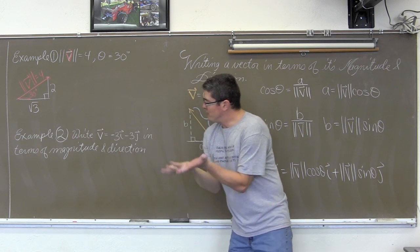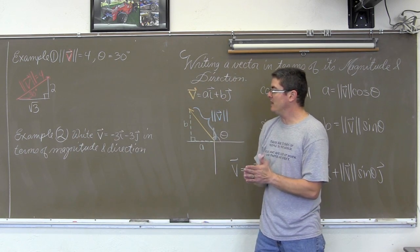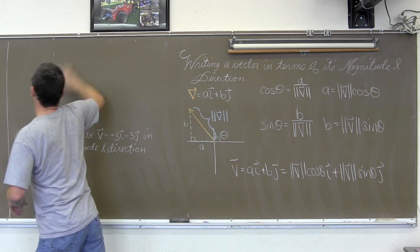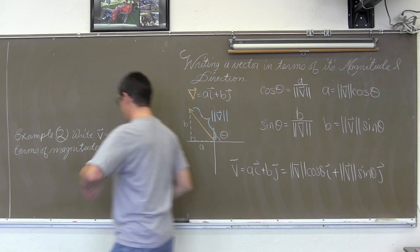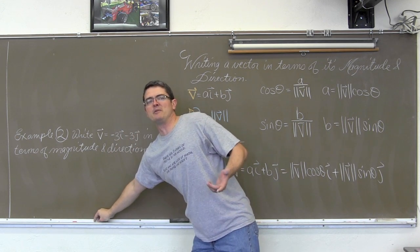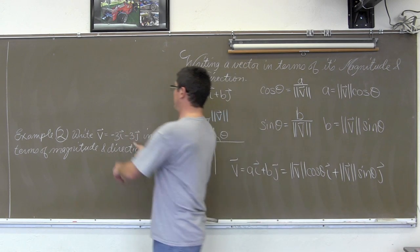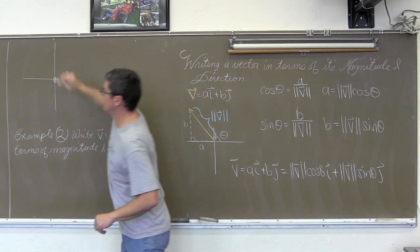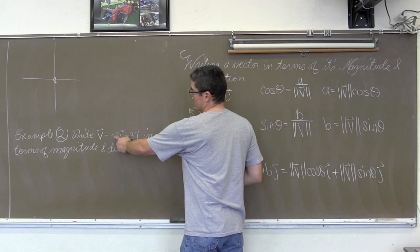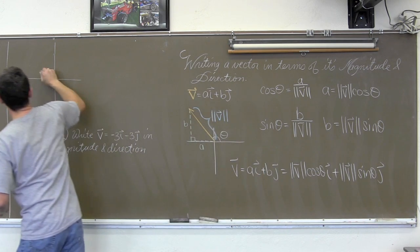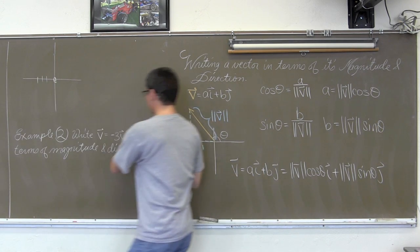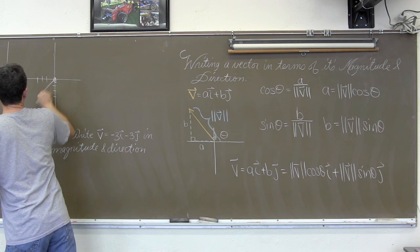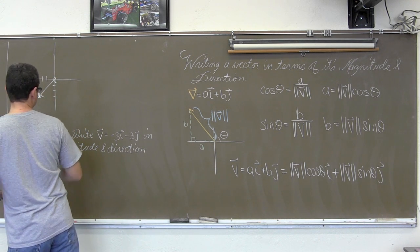Last example: write v equals negative 3i minus 3j in terms of magnitude and direction. So I want to go in the opposite direction. It sounds like it might be new since we are learning vectors, but we have been doing this for about three chapters. Our vector — and I am going to, for convenience sake, put the initial side on the origin — has a horizontal component of negative 3 and a vertical component of negative 3. Here is my vector v.